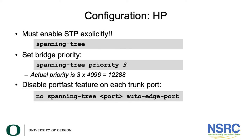For HP, you must enable spanning tree explicitly, as HP comes with spanning tree disabled by default. You then set the priority — in HP you don't set the priority number directly but set a multiple of 4096, to ensure people don't pick a random number. If you say priority 3, that is 3 times 4096, which equals 12k. To disable portfast on the trunk port — since in HP it is enabled by default — you say 'no spanning tree' followed by the port number 'auto-edge-port'.